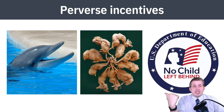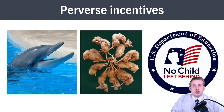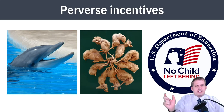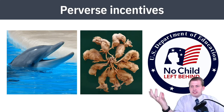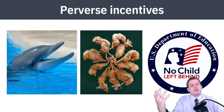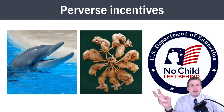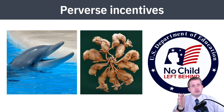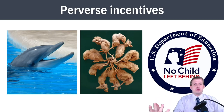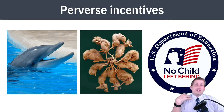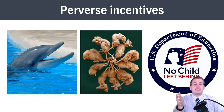Another good example is the No Child Left Behind law that George W. Bush passed early in his first term. They wanted to encourage schools to improve their test scores and make it so students were learning more, so they tied teacher performance and teacher raises to test scores, hoping students would learn more and it could be measured through testing. But what happened in the wake of No Child Left Behind is that schools started shifting their whole teaching strategy toward testing — essentially teaching to the test and doing everything to maximize test scores.